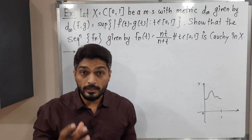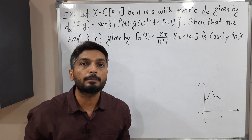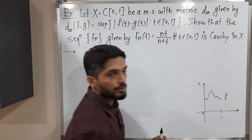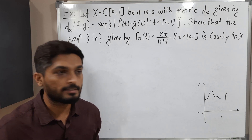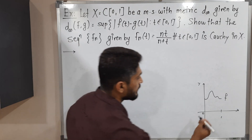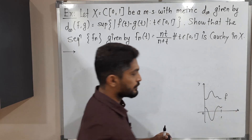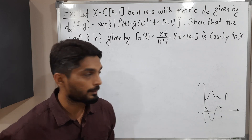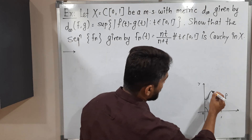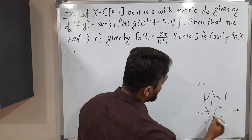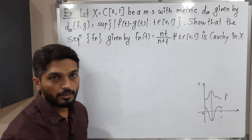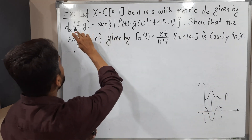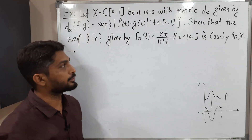So let us try to understand the geometrical meaning of D∞. Suppose this is a continuous function defined on the closed interval [0,1], and this is another continuous function also defined on the closed interval [0,1]. So whatever the maximum distance between these two functions, that value is given by D∞(F, G).